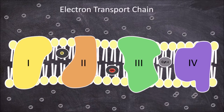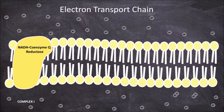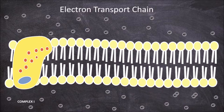The electron transport chain starts with complex 1. Complex 1, also known as NADH coenzyme Q reductase, consists of a flavin mononucleotide and a chain of 9 iron-sulfur redox centers. The chain starts with the NADH produced in glycolysis, pyruvate dehydrogenase, and the citric acid cycle, each being oxidized at complex 1 to produce NAD+ and hydrogen, by the reduction of the flavin mononucleotide into FMNH2.